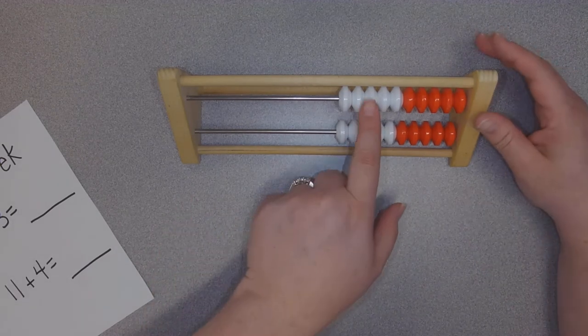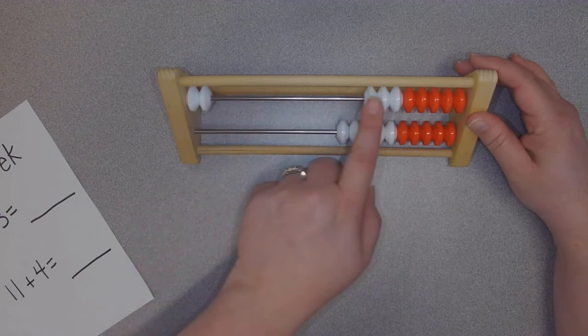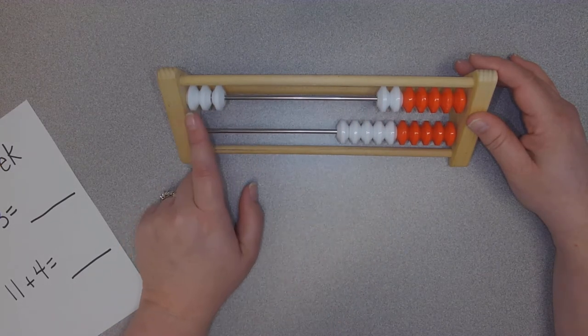So if we were going to do two plus one, I might say two and one. I could also say two and one, and I would see I have three there.